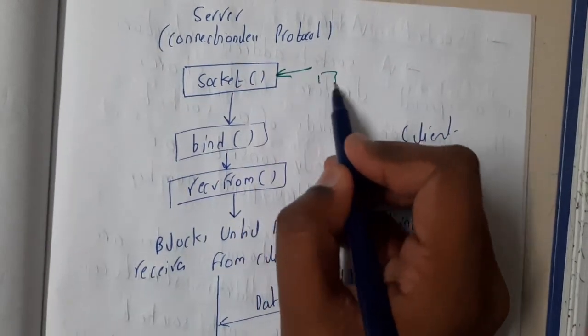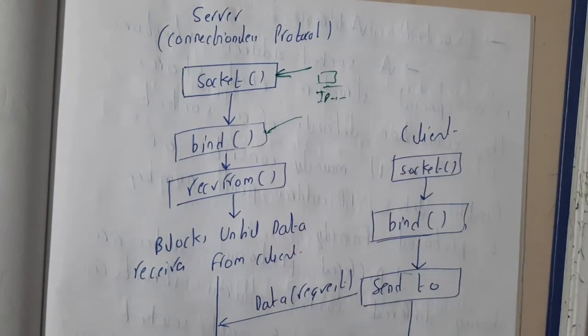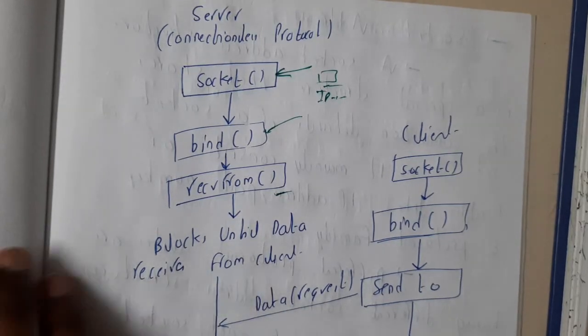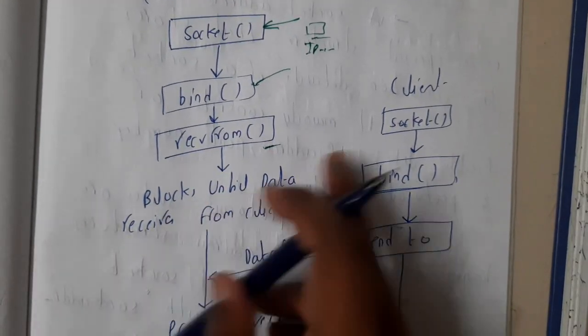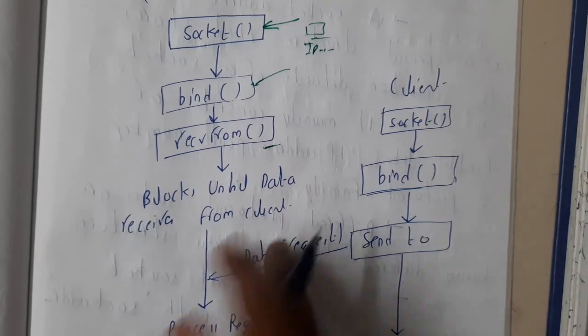Now endpoint is created. Now address has been assigned to the endpoint, that is nothing but IP plus port number. After that, it is ready to receive from anywhere. Once it is ready to receive, assume that the client has been ready and he binded, he also got the IP address.